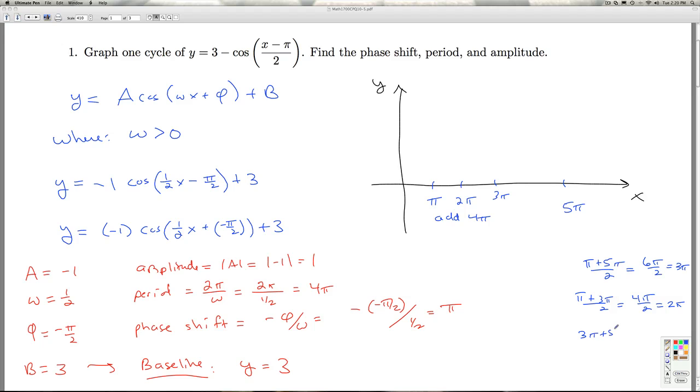And last but not least, 3 pi plus 5 pi over 2 is 8 pi over 2, that's 4 pi. That gives me the number right there.